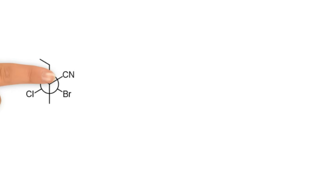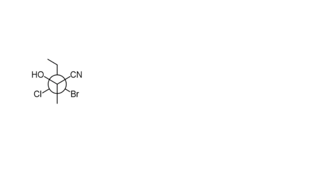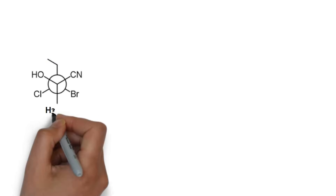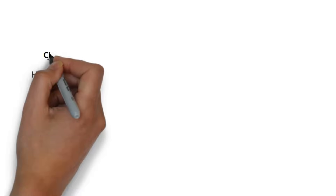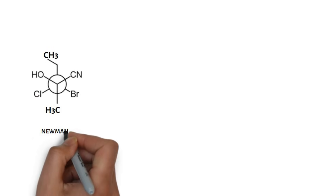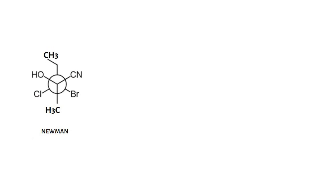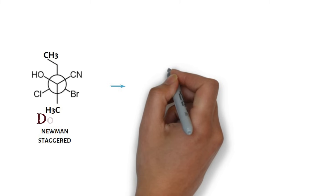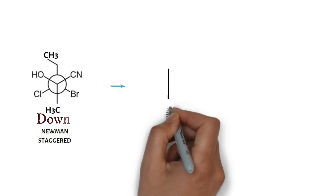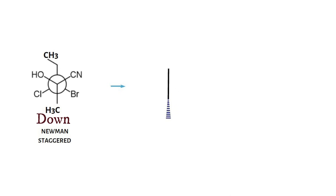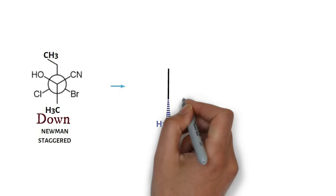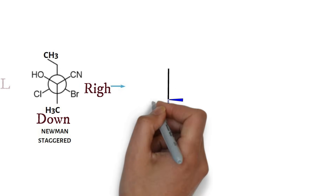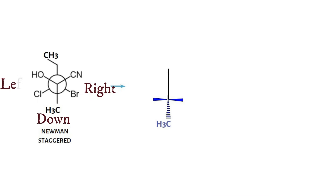Consider this staggered Newman projection. We will now omit the rotation of carbon and directly convert it into a double bow tie by using our trick. On the front carbon, the methyl goes down and is written on dashes; CN appears on the right and OH on the left side.